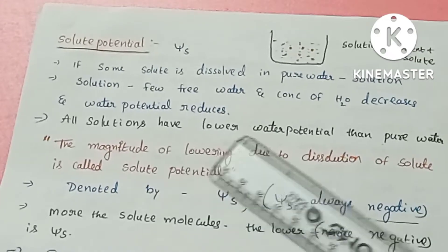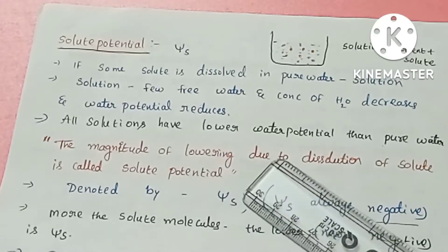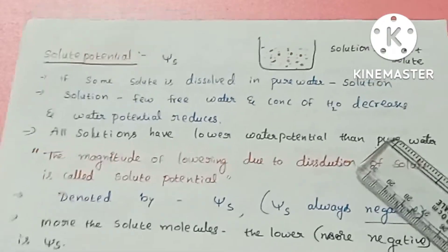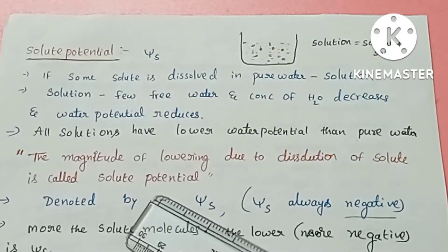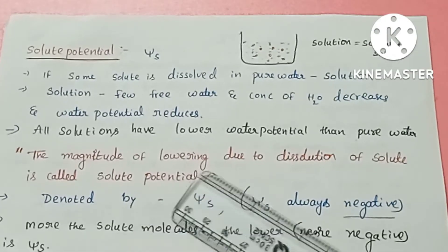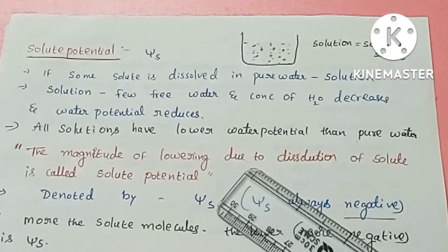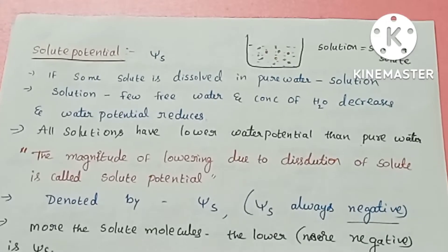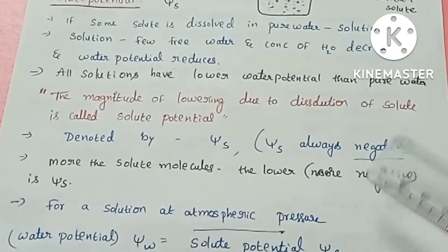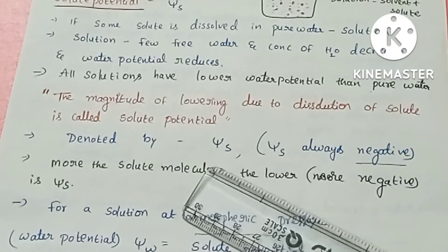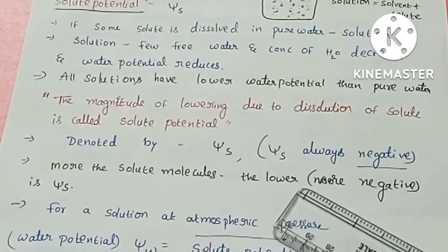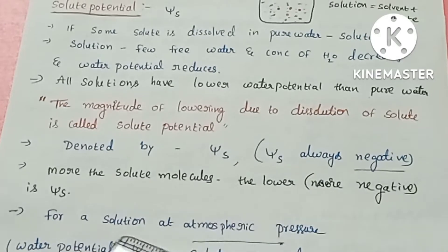Almost all solutions compared to pure water have a lower water potential. The solute potential is defined by the magnitude of lowering of water potential due to the dissolution of a solute. Solute potential is always negative, and the more solute molecules added, the more negative the solute potential.